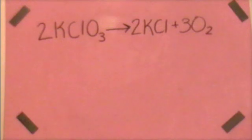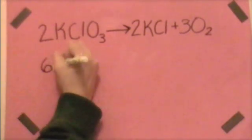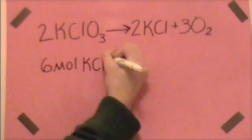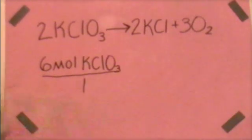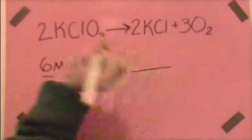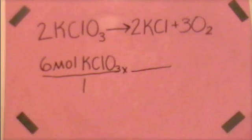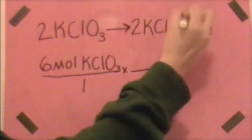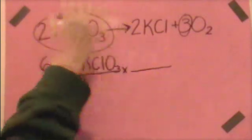So let's start with what we're given. 6 moles of potassium chlorate over 1. We'll multiply that by the mole ratio between oxygen, which is what we're trying to find, and potassium chlorate, which we already have. 3 moles of oxygen and 2 moles of potassium chlorate.